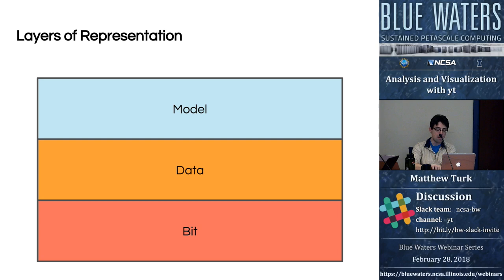These are then translated into Eulerian grids that tessellate the entire domain — that would be the data. And then at the topmost level, from my own work, the model would represent something like a star being formed or a gaseous cloud collapsing.